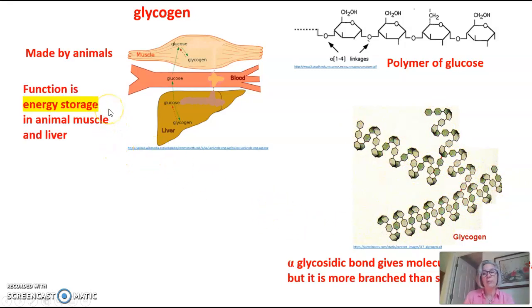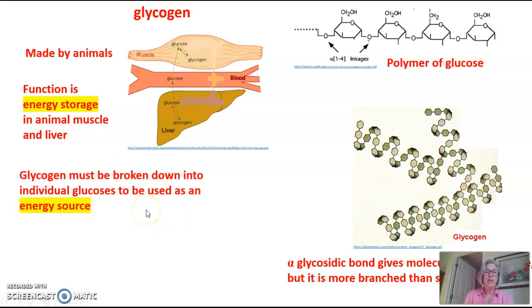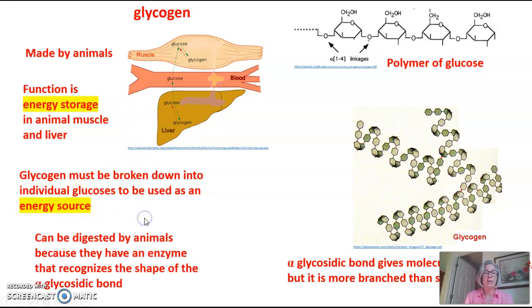The function is energy storage, much like starch, but it's energy storage for the animal. And again, it's only made in the muscle and the liver. Glycogen has to be broken down into individual glucose units to be used as an energy source. So again, pointing out the difference between energy storage and an energy source. Glycogen can be digested by animals because they have an enzyme that recognizes the shape of the alpha glycosidic bond.